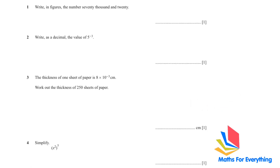The first question: write in figures the number 70,020. This is 70,020. The next one: write as a decimal the value of 5 to the power of negative 3. In your calculator when you put in 5 to the power of negative 3 you will get 1 over 125. Above the delete button there is an SD button — press that to change it to a decimal, and you will get 0.008.